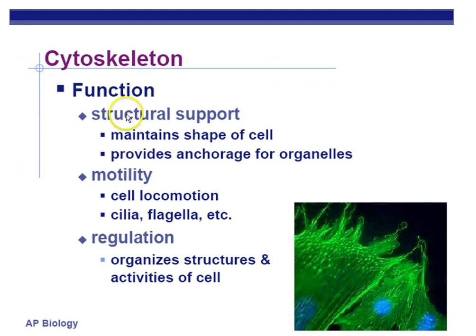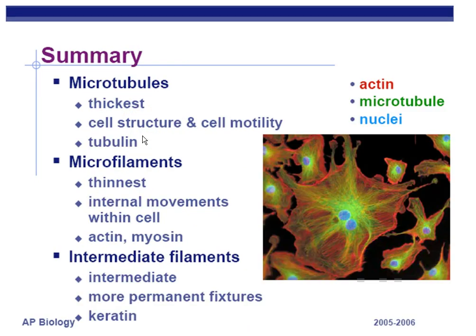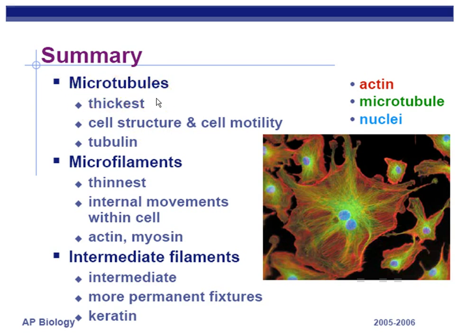The cytoskeleton is involved with structural support, motility, and regulation — holding things in place, moving things around, and providing support to keep the cell shape, especially in animal cells. There are three types of cytoskeleton structures. Microtubules are the thickest, made of a protein called tubulin. Microtubules are used in spindle fibers during mitosis and meiosis, and are also involved with cilia and flagella — the two things that can move things around.